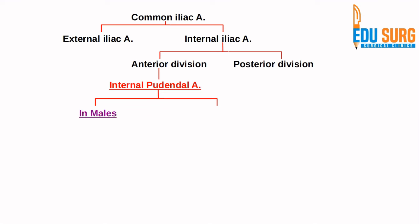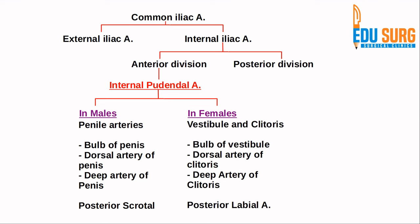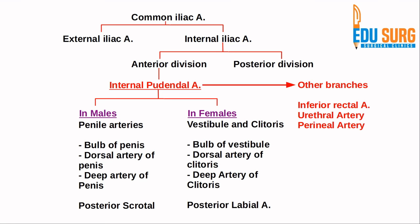The internal pudendal artery has multiple branches that differ in males and females. In males, it gives rise to scrotal and penile arteries. In females, the scrotal equivalent is the labial artery, and the penile equivalent branches supply the clitoris and vestibule. The blood supply to the bulb, dorsal artery, and deep artery in both sexes is supplied by the internal pudendal artery. It also supplies the urethra, the perineal artery, and the inferior rectal artery. Please remember this chart or take a screenshot for rapid revision — it is very commonly asked in exams and important for operating in this area.